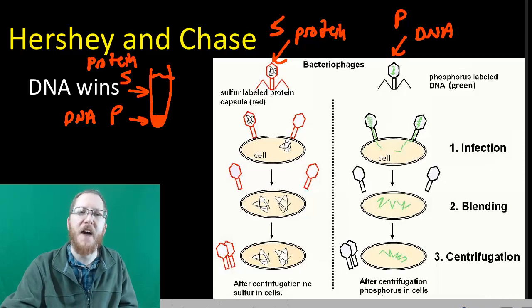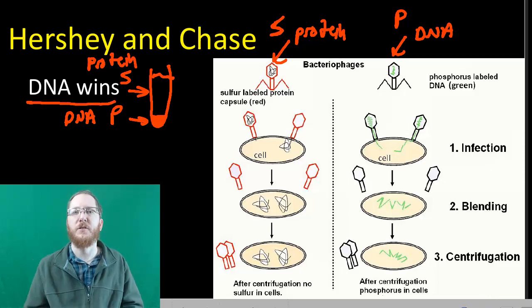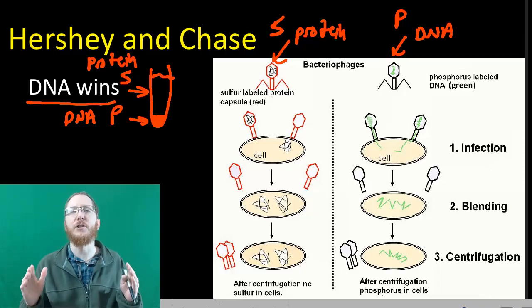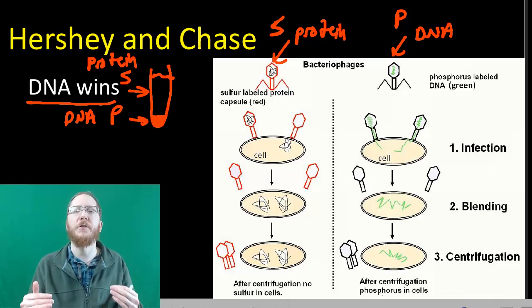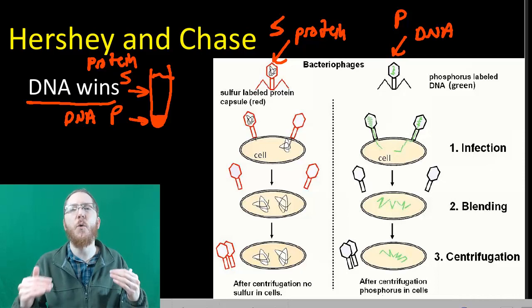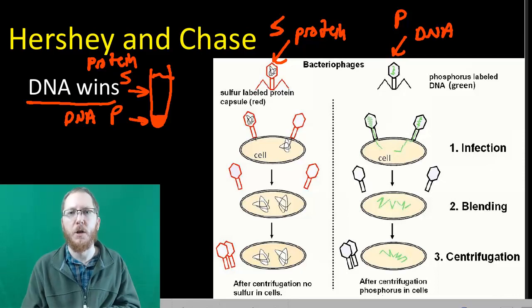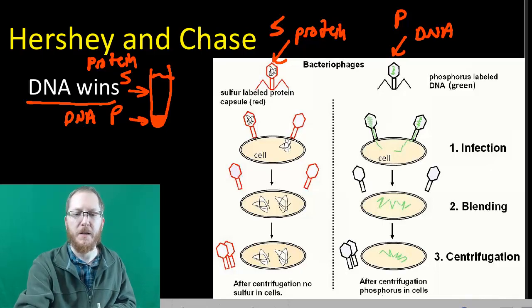So that meant that DNA had entered the bacterial cells, but protein had not. And that ultimately was the final straw that allowed for us to realize DNA is the genetic material. And from that point on, the race began to try and understand DNA and how exactly it worked as our genetic material, which is some of the stuff that we'll be coming and working with shortly. Hope you guys enjoyed it.